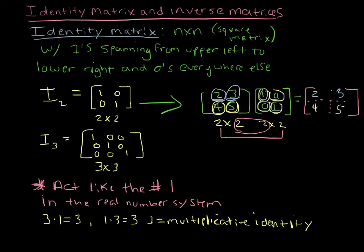So you'll see that by multiplying our matrix times the identity, we just got that same matrix back again, right? So that's why the identity matrix acts like the number 1.